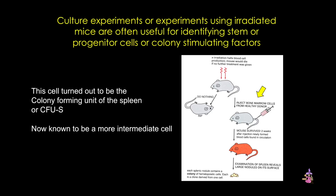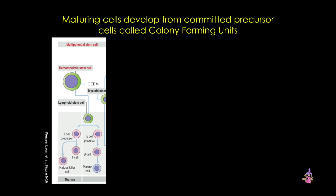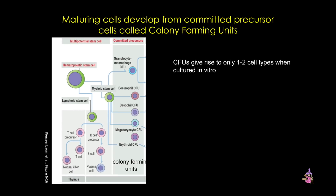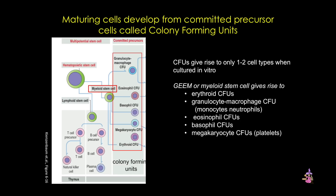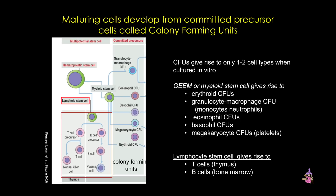A colony-forming unit is essentially the committed precursor for the major blood cell types. Those multipotent stem cells give rise to committed precursors that are restricted to only giving rise to one or two cell types in culture, or when injected into irradiated mice. For example, myeloid stem cells eventually give rise to colony-forming units for eosinophils, megakaryocytes, and basophils, while the lymphoid stem cell eventually gives rise to CFUs for T cells and B cells.